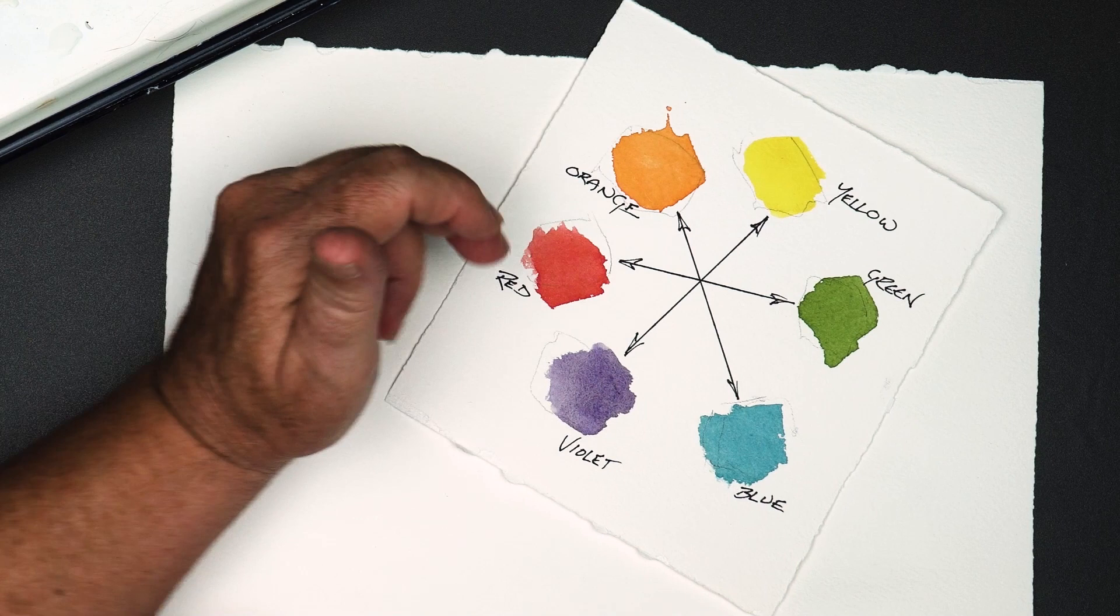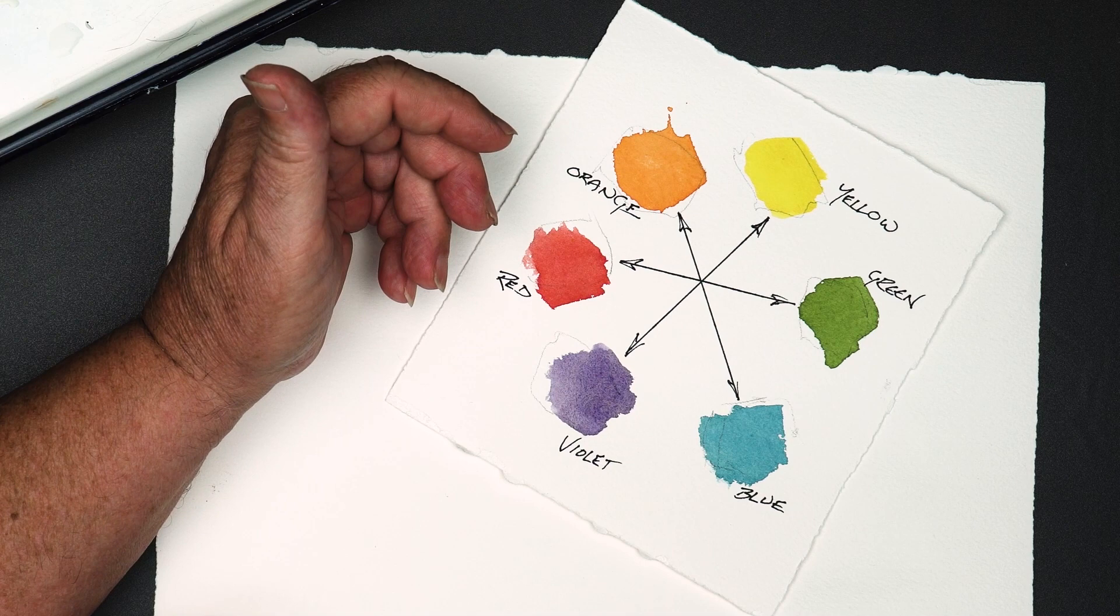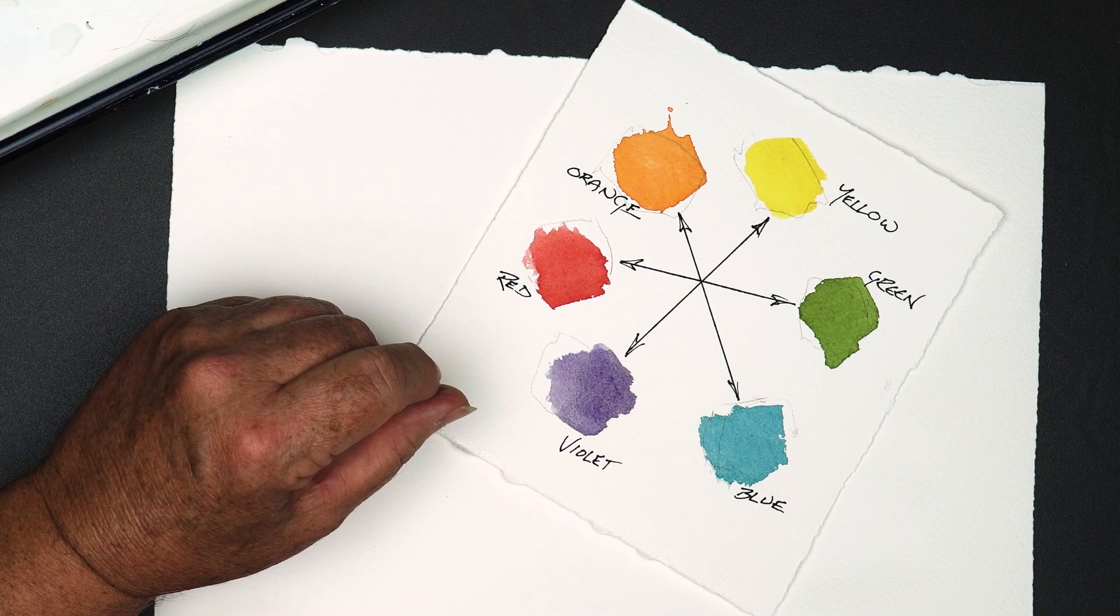So the complementary color of red is green, orange is blue, yellow is violet. This is what we use to create our shadows in watercolors.